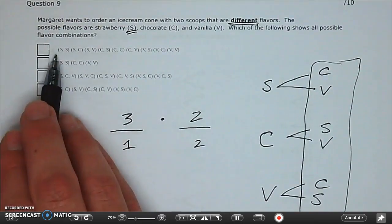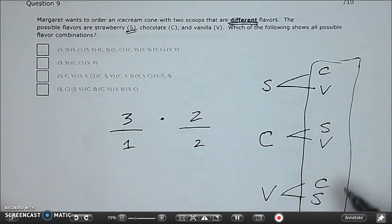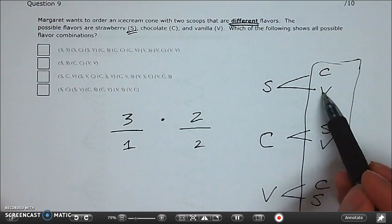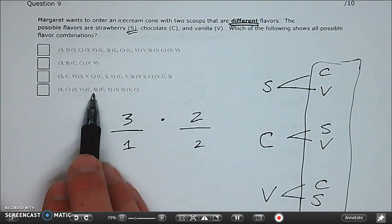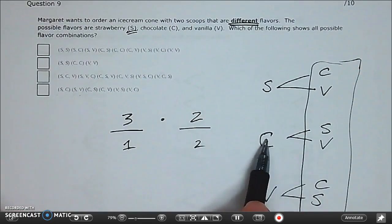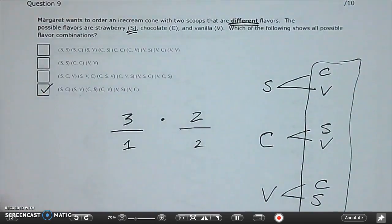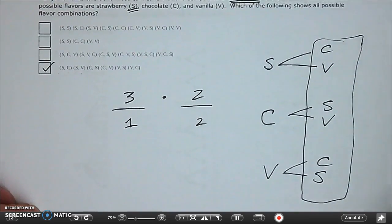So our answer choices are not six. Which is why it makes sense to list these out. So we could have strawberry and chocolate. We could have strawberry and vanilla. So we're looking for the one that makes the most sense. Strawberry chocolate, strawberry vanilla. Chocolate strawberry, that's here. Chocolate vanilla, that's there. Vanilla chocolate, that's here. And vanilla strawberry, that's right here. So this actually ends up being our best choice. It just looks a little confusing. So you've got to look carefully.